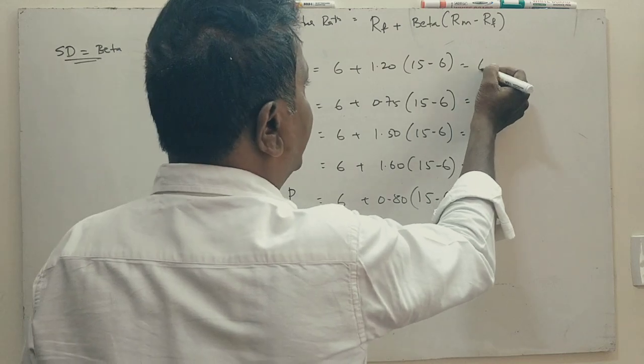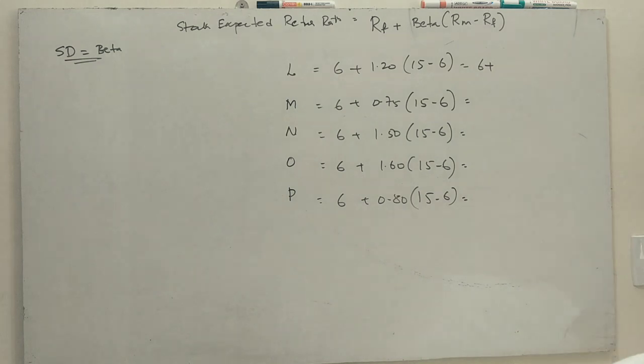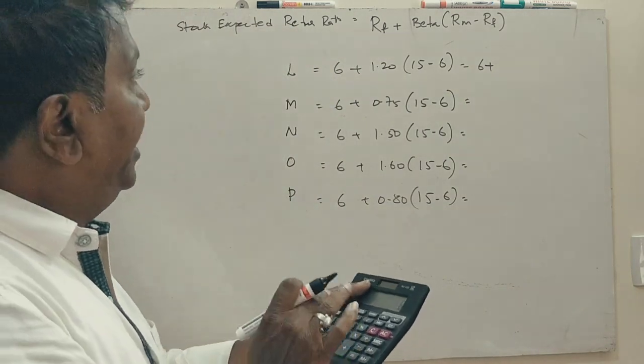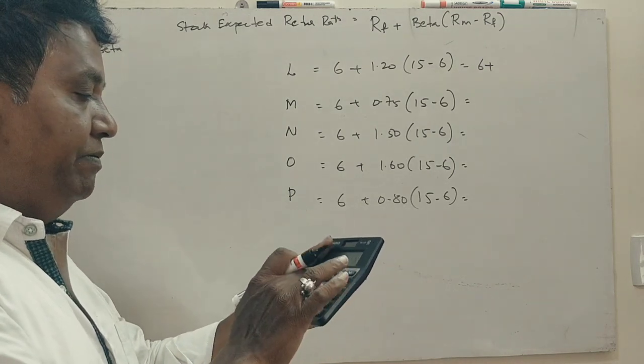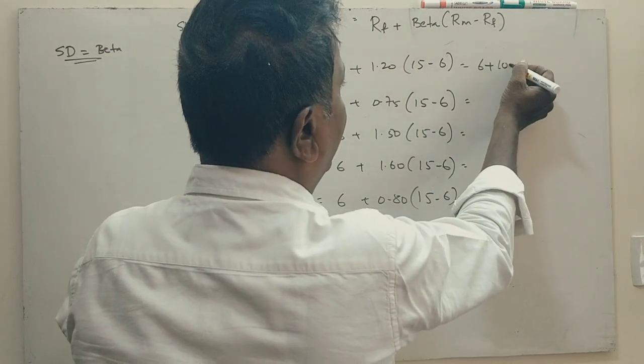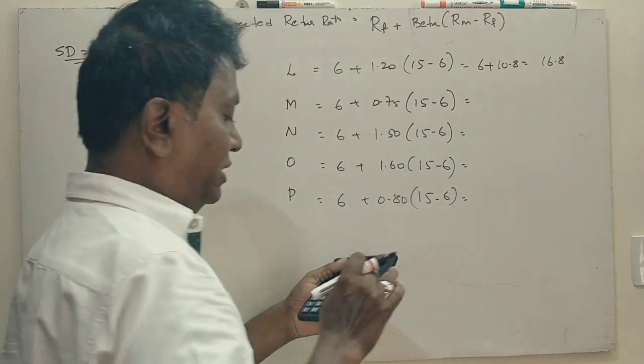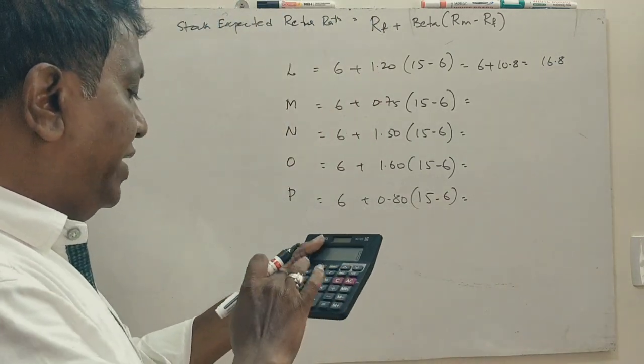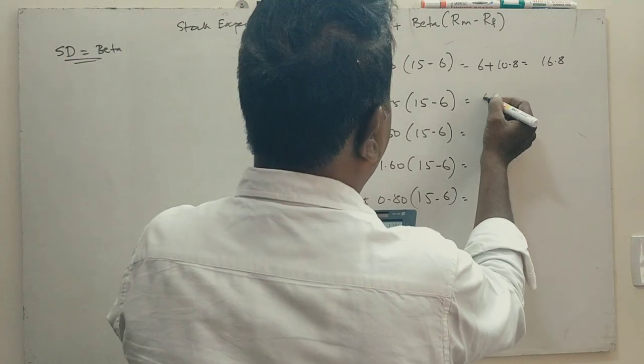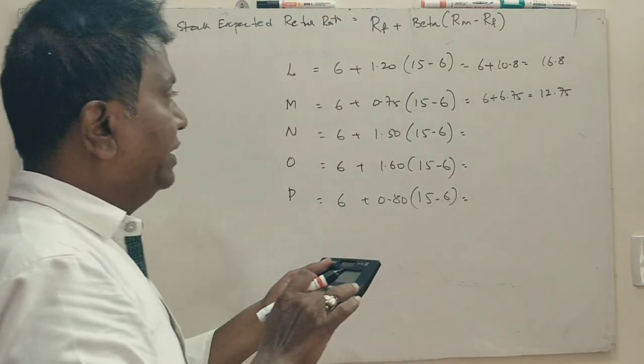Now, 6 plus 15 minus 6 is 9. See, 15 minus 6 is 9 into 1.2, 10.8. So 6 plus 10.8 is 16.8. Next, 9 into 0.75 plus 6, 6 plus 6.75 is 12.75.